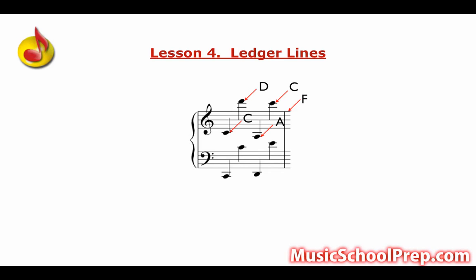Now, the same rules apply to bass clef staff. Since the top line here is always an A, this is a C, and this is an E. And as this bottom line on the bass clef staff is always G, these notes are a C and a D.